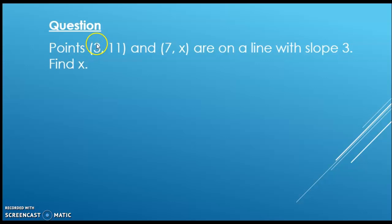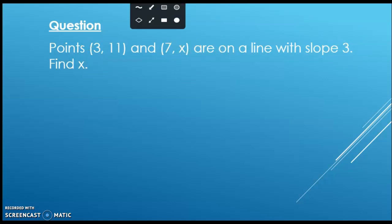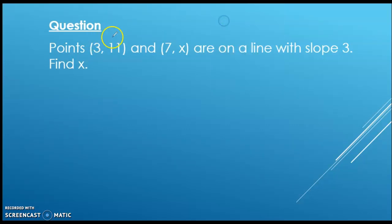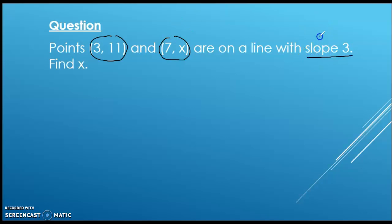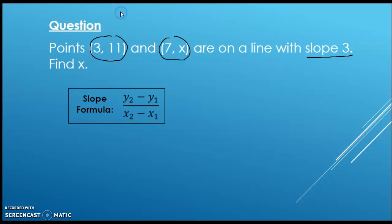Let's take a look at this first question. The first question says: points three comma eleven and seven comma x are on a line with a slope of three. Find x. So let's first highlight a couple of things — we have a point three comma eleven and seven comma x, and we have a slope of three. That's going to tell us we are going to use our slope formula.